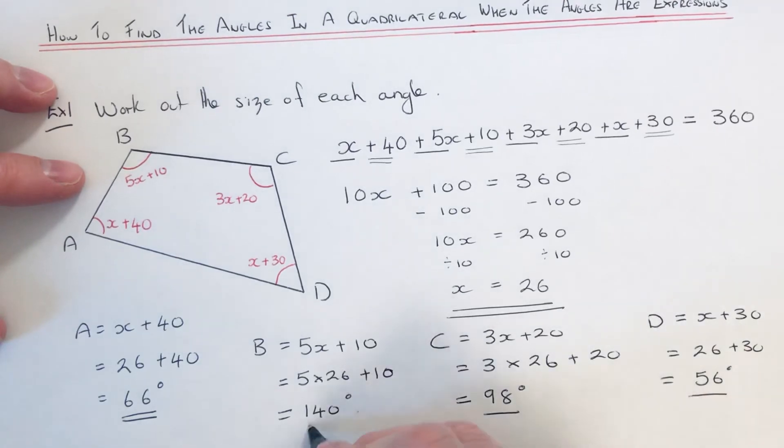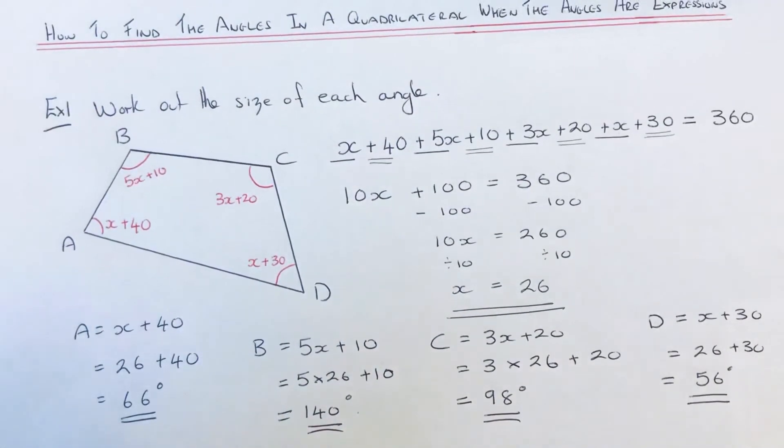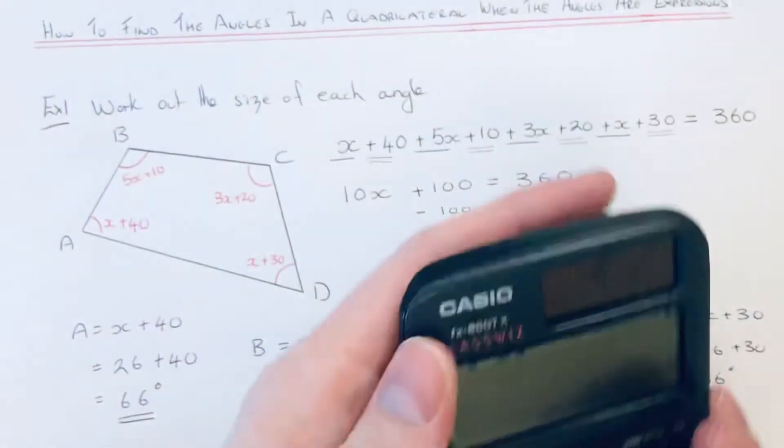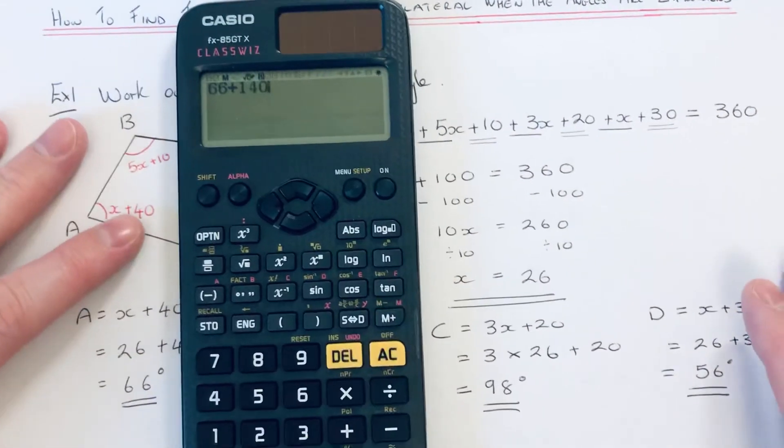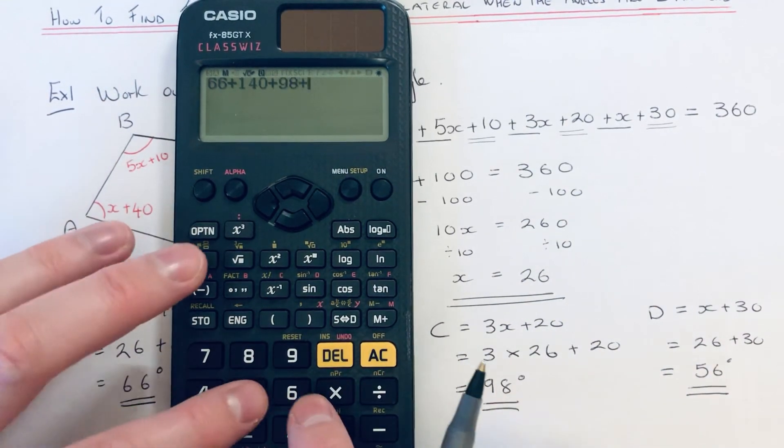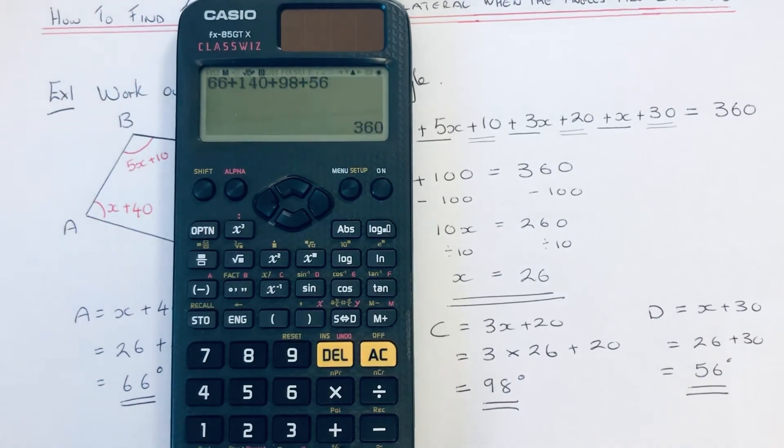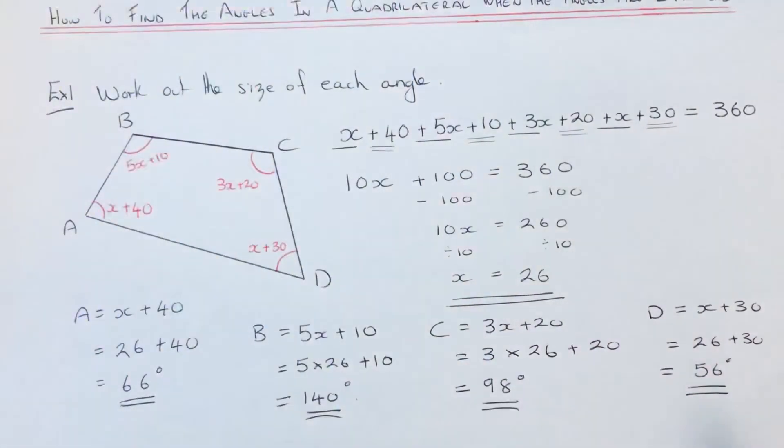So these are our four angles. You can check that these add up to 360. Let's see if we write: we've got 66 add 140, add 98, add 56. There you go, so it equals 360. So we know our answers are correct.